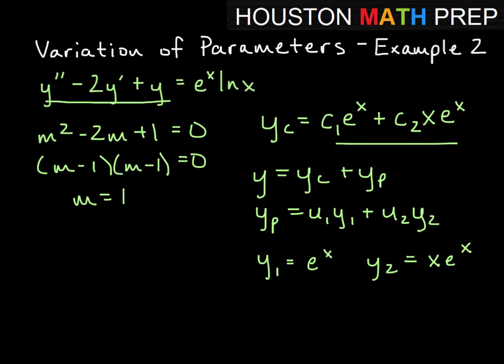And then we can work our first Wronskian from that. So taking those two equations and putting them in the first row, e to the x and x times e to the x. So the derivative of each of those: the derivative of e to the x is e to the x. The derivative of x times e to the x, that's a product rule, so we will have x e to the x plus e to the x for that derivative.